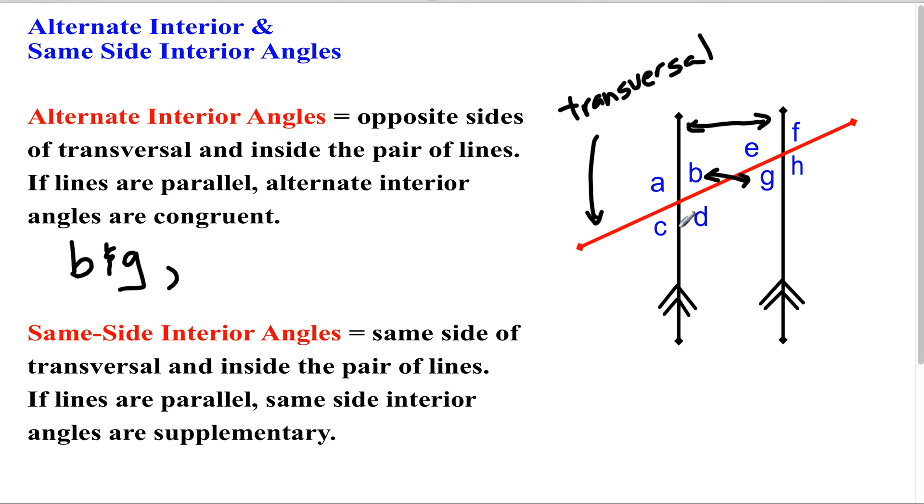Also, there's another pair: D and E. Once again, they're between the parallel lines and on opposite sides of the transversal. So we have two pairs of alternate interior angles.